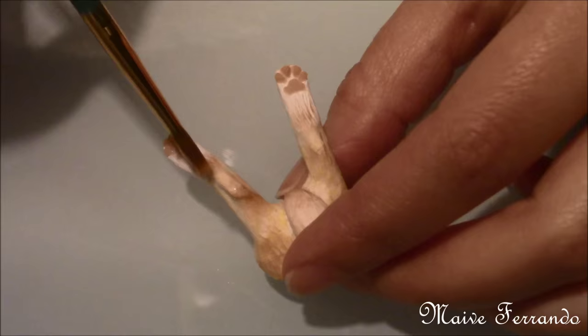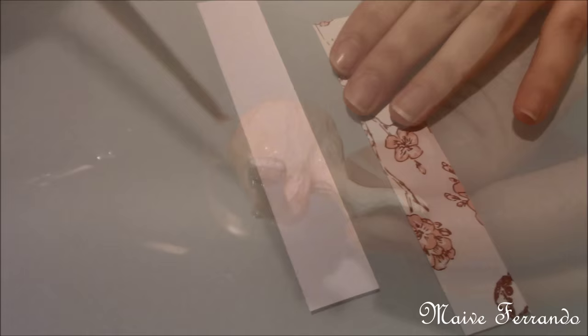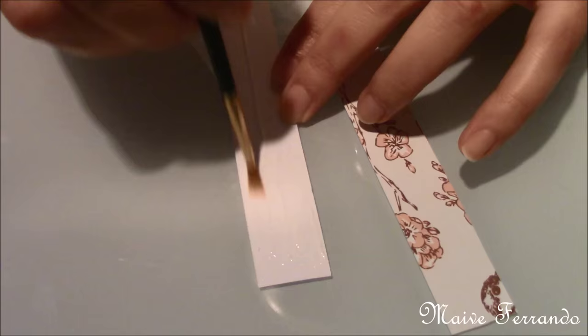Glaze your bunny with water based varnish and let it dry completely. In the meantime, glue the pieces of paper together and decorate it any way you want.